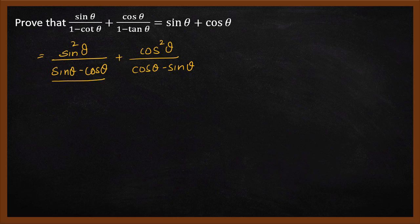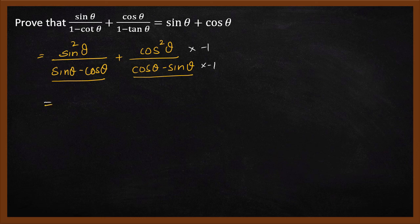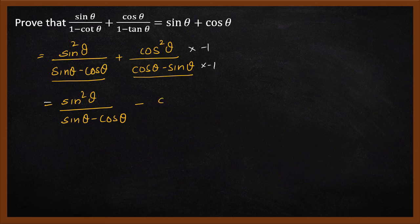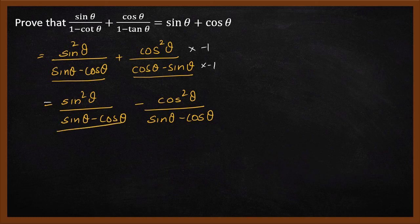Now look at the denominators: it is sine theta minus cos theta, and cos theta minus sine theta — the only difference is the sign. So what I'm going to do is multiply the second term — both numerator and denominator — by minus one, so that the denominator becomes the same. Doing that, we get sine squared theta divided by sine theta minus cos theta, and the second term's numerator becomes minus cos squared theta, with the denominator now sine theta minus cos theta.